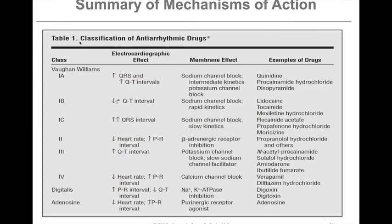In the last lecture we mentioned how some dysrhythmias can arise - in particular how channels can open or close when they are not supposed to. Therefore, in order to treat these dysrhythmias we need to block this from happening. This slide shows how anti-dysrhythmic drugs are classified using the Vaughan-Williams classification system. Class 1 drugs mainly block sodium channels, class 2 drugs target beta-adrenergic receptors, class 3 drugs target potassium channels, and class 4 drugs target calcium channels. This table also shows digitalis and adenosine, but digitalis will be discussed in the next lecture for its effects on contractility.